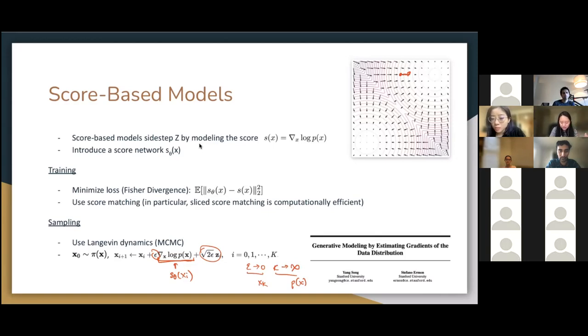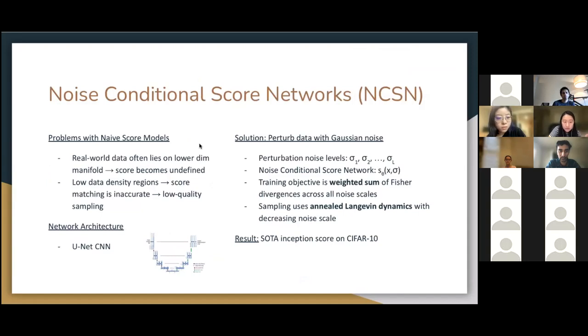Okay, so this is kind of roughly how score-based models work. But it turns out that naive score-based models didn't just work right away. There's some problems it faces. So real-world data often lies on lower dimensional manifolds, and in this case, the score function becomes undefined. Also in low data density regions, score matching becomes inaccurate, which leads to low quality sampling. So to solve these problems, they found a solution was to perturb the data with Gaussian noise. Perturbing data with Gaussian noise solves the manifold problem because it disrupts the manifold, and it also allows for better exploration of low data density regions if data is perturbed into a lower density region. Now we face this trade-off, right? Because if you perturb the data with too much noise, the data will look inaccurate. And if we don't perturb the data enough, we might not explore the low data density regions enough.